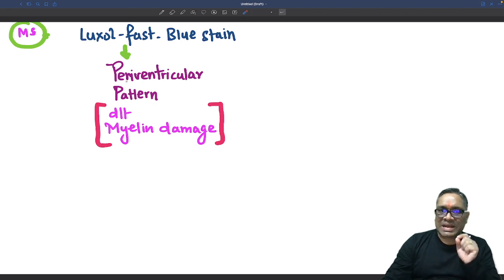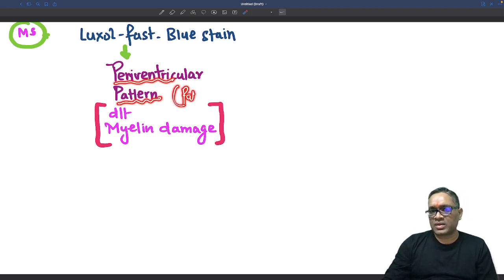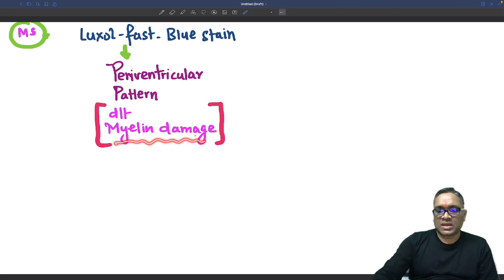Luxol Fast Blue stain shows a characteristic periventricular pattern of pallor in multiple sclerosis. This pallor occurs because of myelin sheath damage.